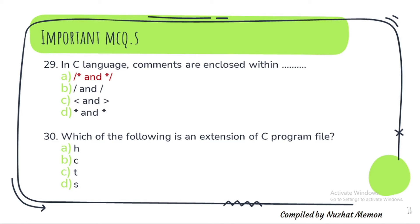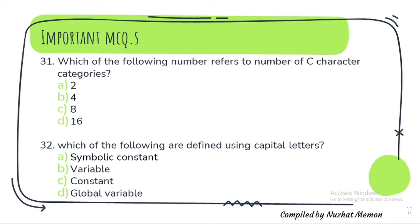Question 30: Which of the following is an extension of a C program file? Option B — that is .c. Question 31: Which of the following number refers to the number of C character categories? The correct option is B — four. Question 32: Which of the following are defined using capital letters? The correct option is symbolic constant.